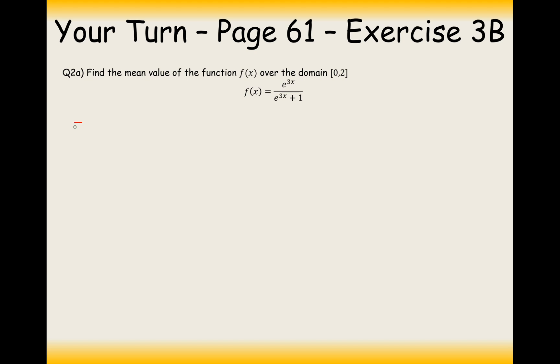So the answer to this question, let's get started. It's going to be one over two because it's one over b minus a from the boundary of two down to zero of e to the three x over e to the three x plus one.